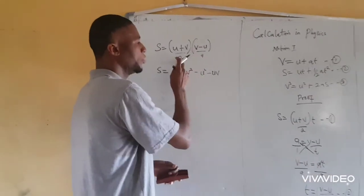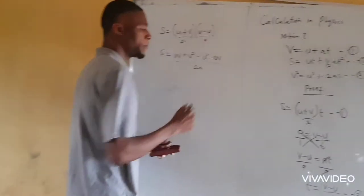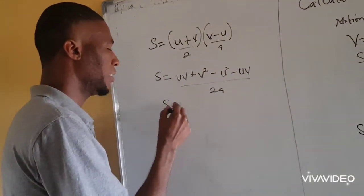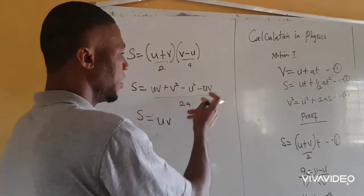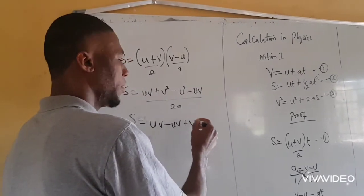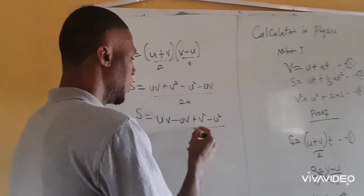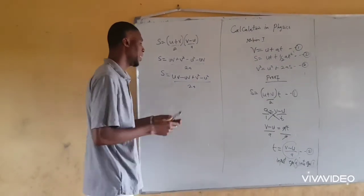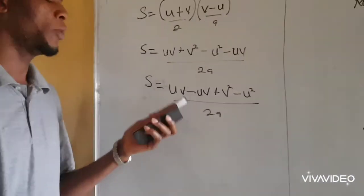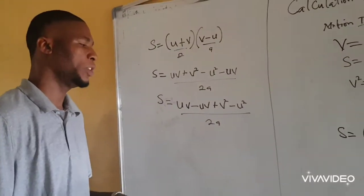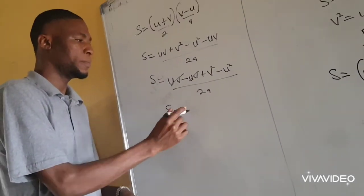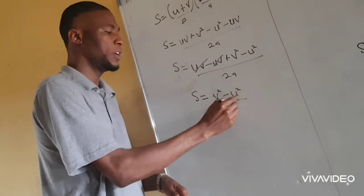We are getting close to the third equation of motion. We now have x equals v-squared minus u-squared over 2a. Cross multiplying — because we want to make v the subject — we get v-squared minus u-squared equals 2ax. Moving the u-squared across the equal sign, a minus becomes positive, giving us v-squared equals u-squared plus 2ax.